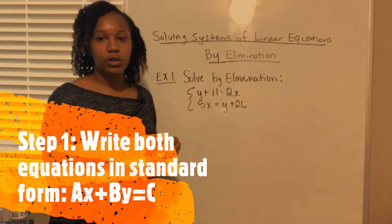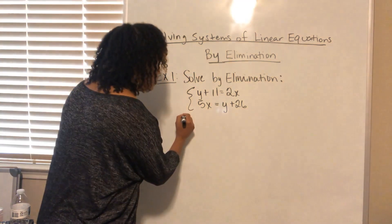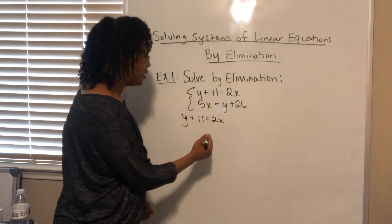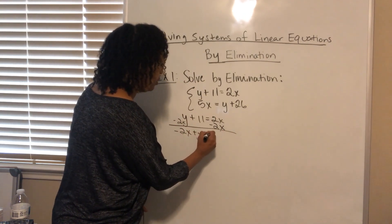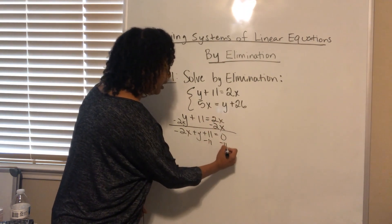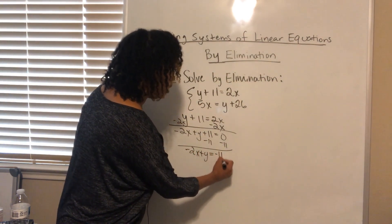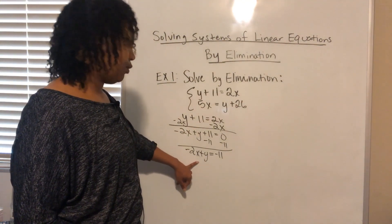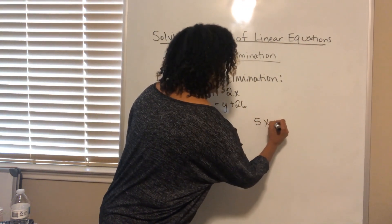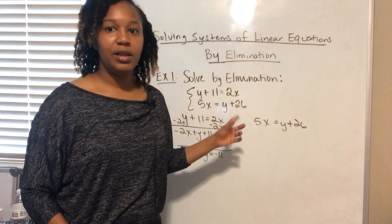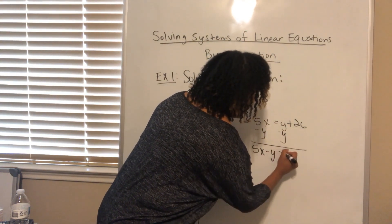Standard form is ax plus by equals c — basically we want to get all the x's and y's on the same side and the constant term on the other side. For y plus 11 equals 2x, I move the 2x to the other side, giving me negative 2x plus y plus 11 equals 0, then subtract 11 from both sides to get negative 2x plus y equals negative 11. For the second equation, I subtract y from both sides and get 5x minus y equals 26.